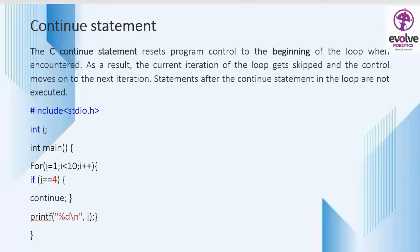In the case of the continue statement, it resets program control to the beginning of the loop when encountered. As a result, the current iteration of the loop gets skipped and control moves to the next iteration. The statements after the continue statement in the loop are not executed. When i becomes four, the loop continues to the next iteration — that is, the value of four gets skipped — so the output prints one to ten except the value four. This is the concept of decision making in C programming.